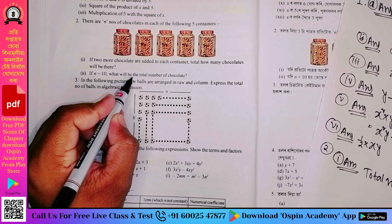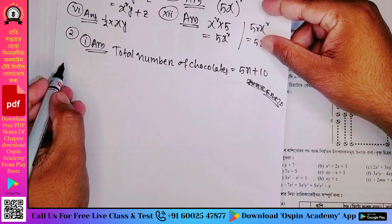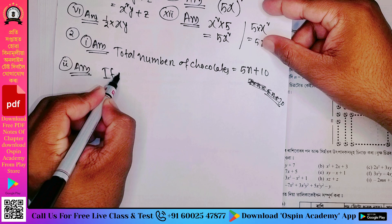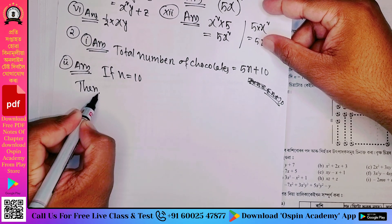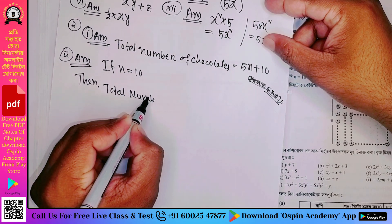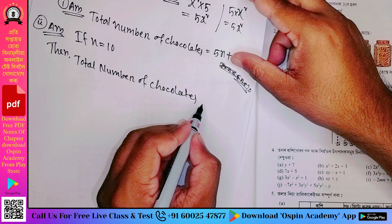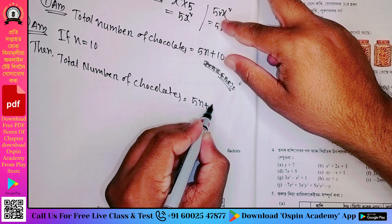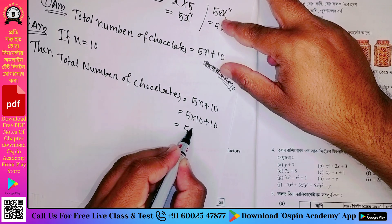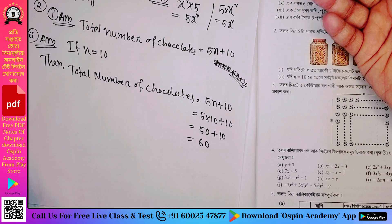If n equals 10, what will be the total number of chocolates? The answer: if n equals 10, then total number of chocolate equals 5n plus 10, that is 5 times 10 plus 10, which is 50 plus 10, that means 60. So the total number of chocolates will be 60.